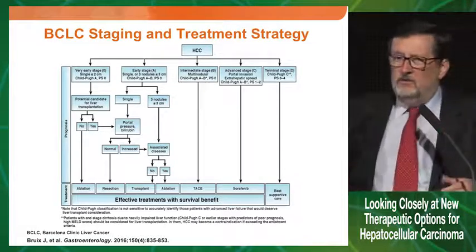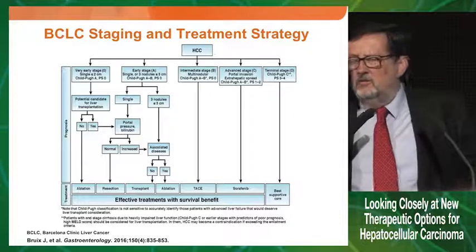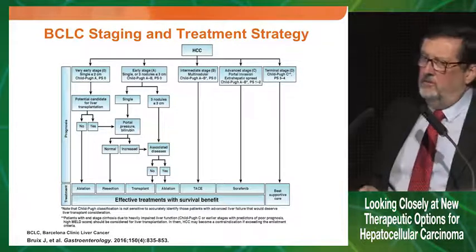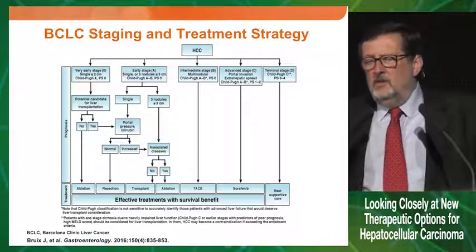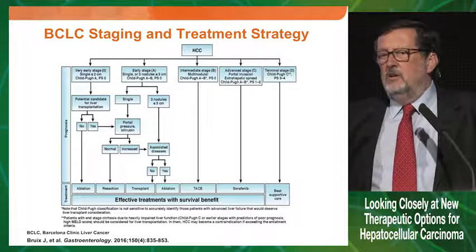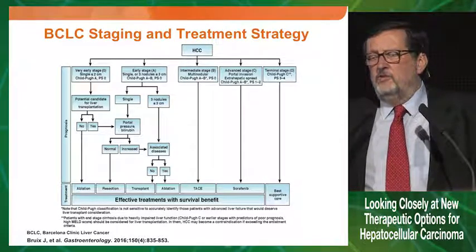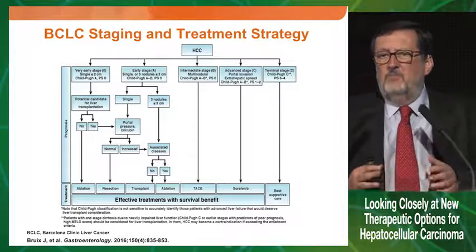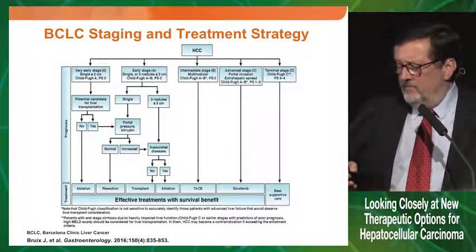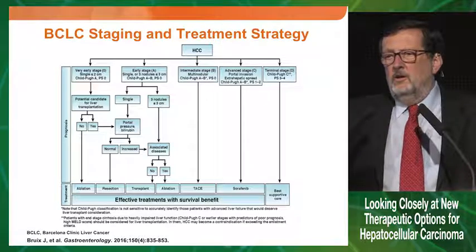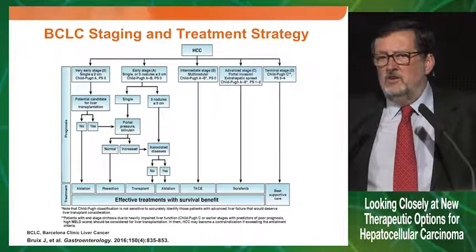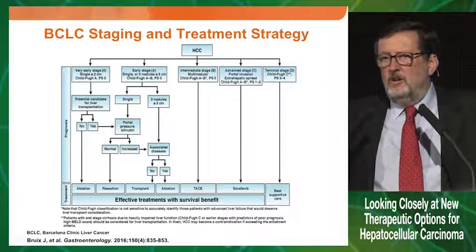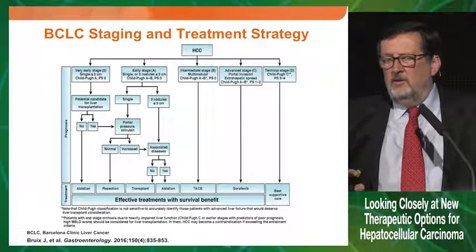When we wrote this update — first in seminars and then in gastroenterology this year — we made more emphasis on how to evaluate liver function. When you think of the Child-Pugh score, you have to remember that it was developed to evaluate the risk of surgery for variceal bleeding, mostly transsection of the esophagus, and the statistics were very soft at that time. It became clinically appealing, but Child-Pugh C is very dismal, and Child-Pugh A patients can still have ascites, so it doesn't really capture the full profile that liver patients may have.